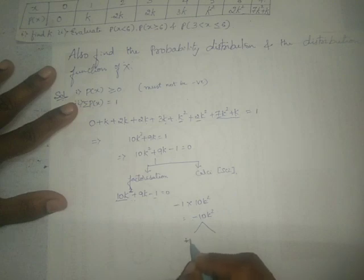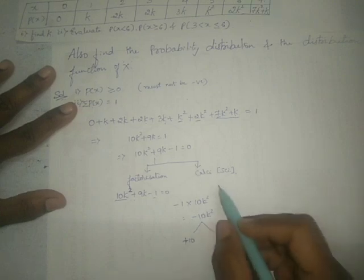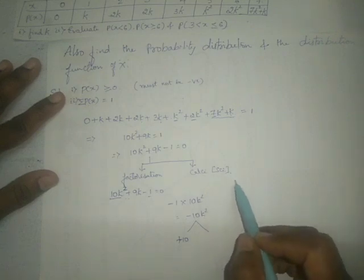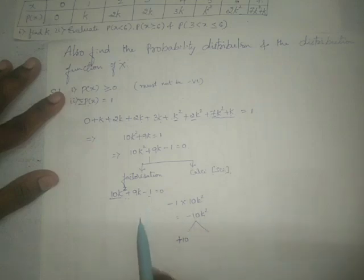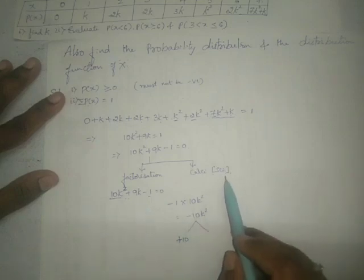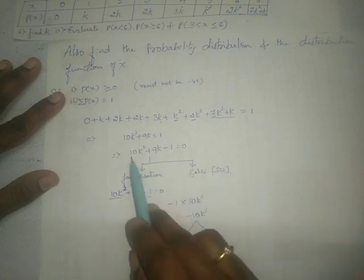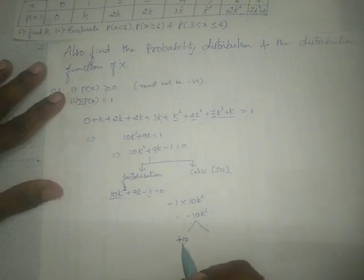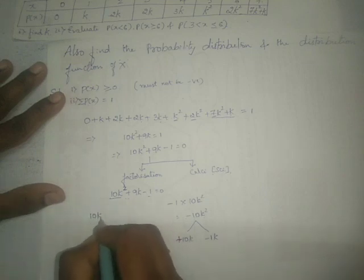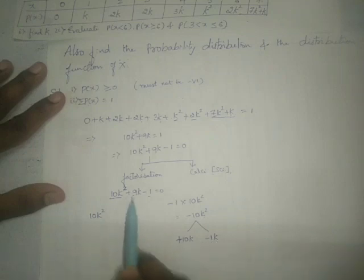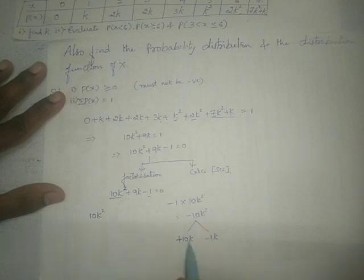Since we have a scientific calculator we can skip these steps and get the answer in one step with the correct instructions. By splitting 9K as 10K minus 1K, we get 10K squared plus 10K minus 1K minus 1, and their multiplication equals minus 10K squared.